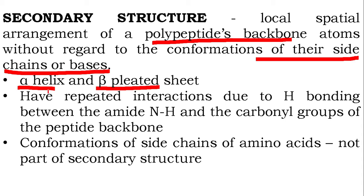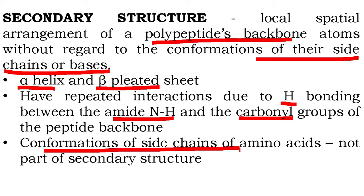Both alpha helix and beta pleated sheet have repeated interactions due to hydrogen bonding between the amide N-H group and the carbonyl group of the peptide backbone. The peptide backbone has a hydrogen donor — the amide N-H group — and a hydrogen acceptor — the carbonyl group. Hydrogen bonds form between them. Conformations of the side chains are not considered when studying secondary structure.